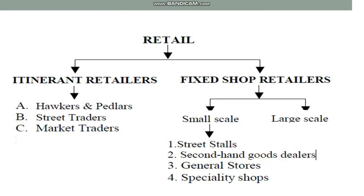Now let's discuss retail trade. Under retail trade there are two types: itinerant retailers or mobile traders, and fixed shop retailers or permanent shops. Under itinerant retailers we have hawkers and peddlers, street traders, and market traders. Under permanent shops or fixed shop retailers, we have small-scale retailers and large-scale retailers.